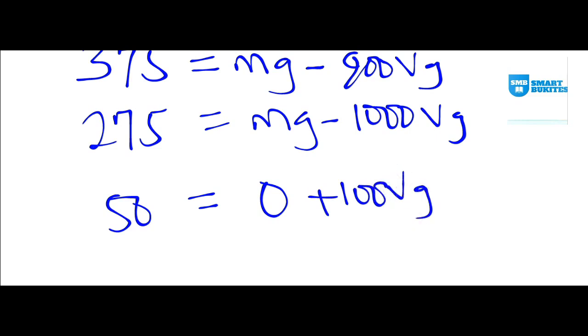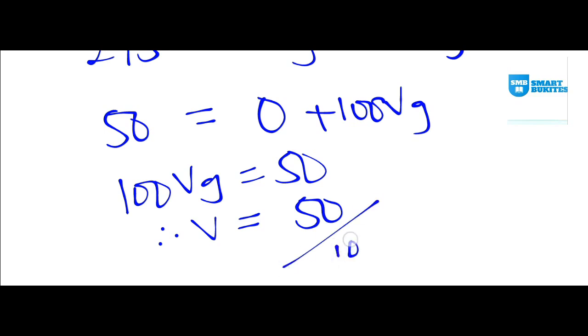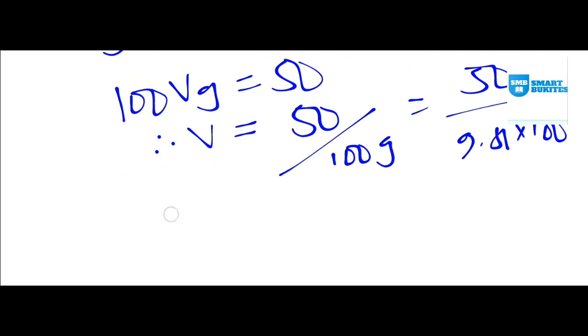G is a constant, acceleration due to gravity. Therefore, V is going to be 50 divided by 100 G, which equals 50 divided by 9.81 times 100. Calculating this correctly, you'll see that V equals 0.05 meter cube.